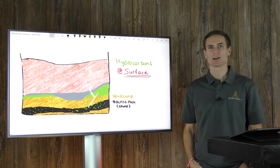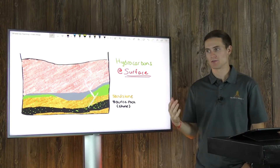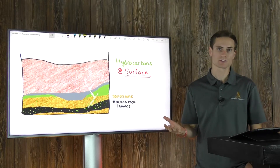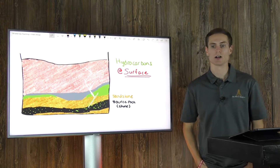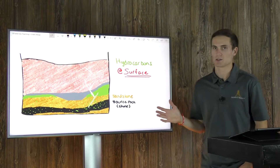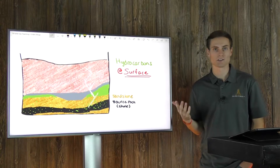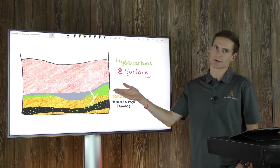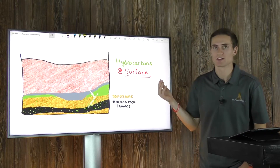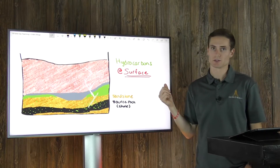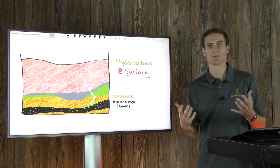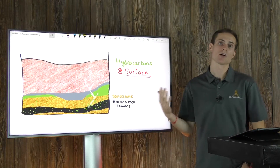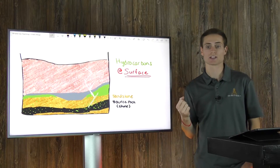Now let's talk about hydrocarbons at surface — natural seeps where oil is oozing out of the ground, or instances of groundwater contamination. Hydrocarbons can be generated in two ways: thermogenic generation, where organic matter in the source rock is buried deep and with time, pressure, and heat generates hydrocarbons; and biogenic generation, which typically happens much closer to the surface at shallower depths through a quicker chemical process that doesn't necessarily require the same pressures and heat. Biogenic processes can also generate hydrocarbons at shallow depths.